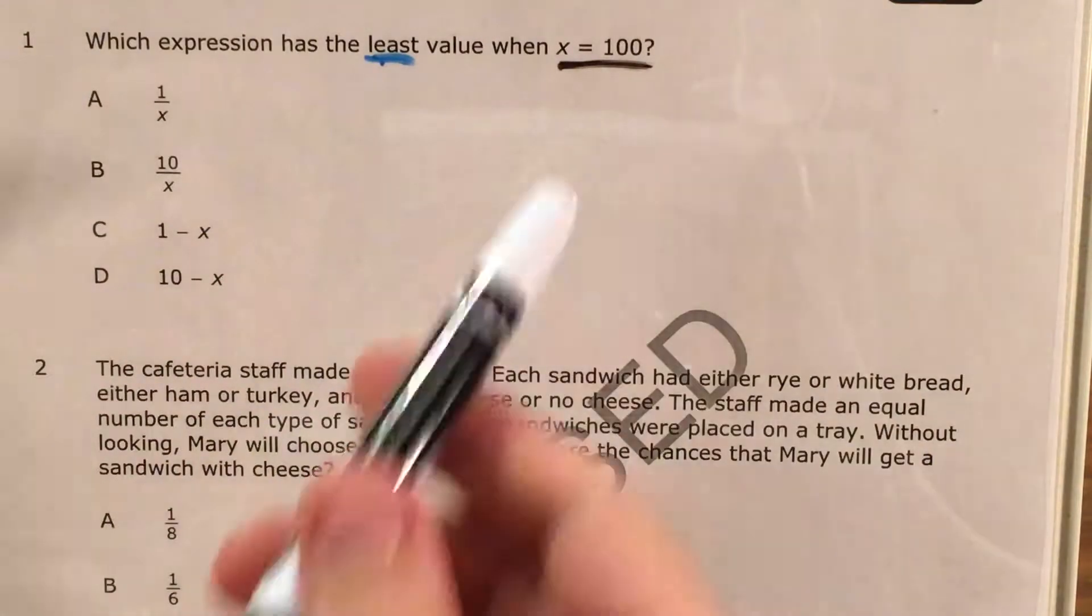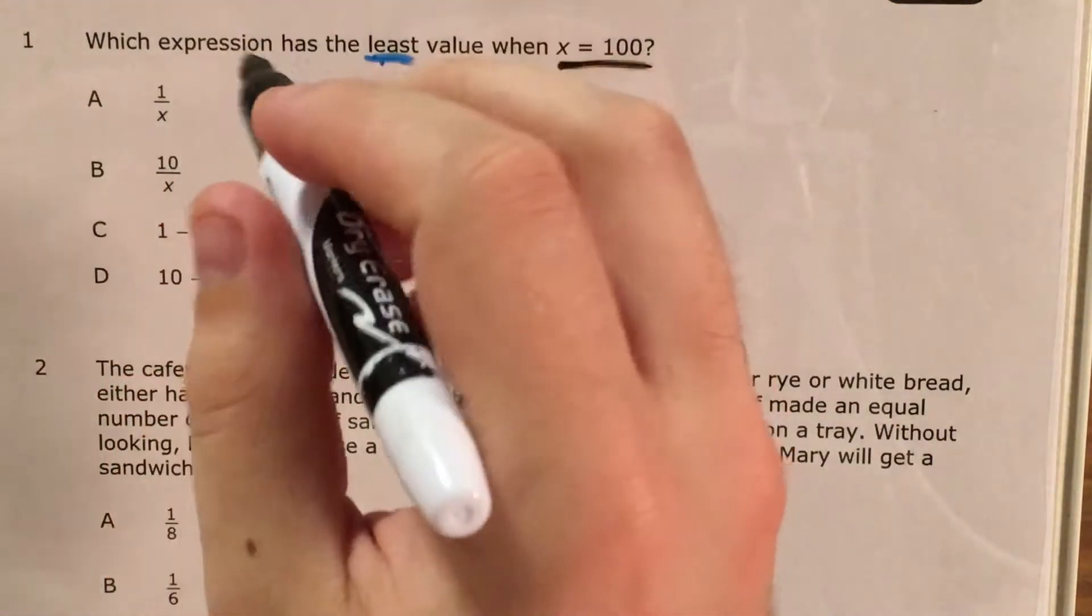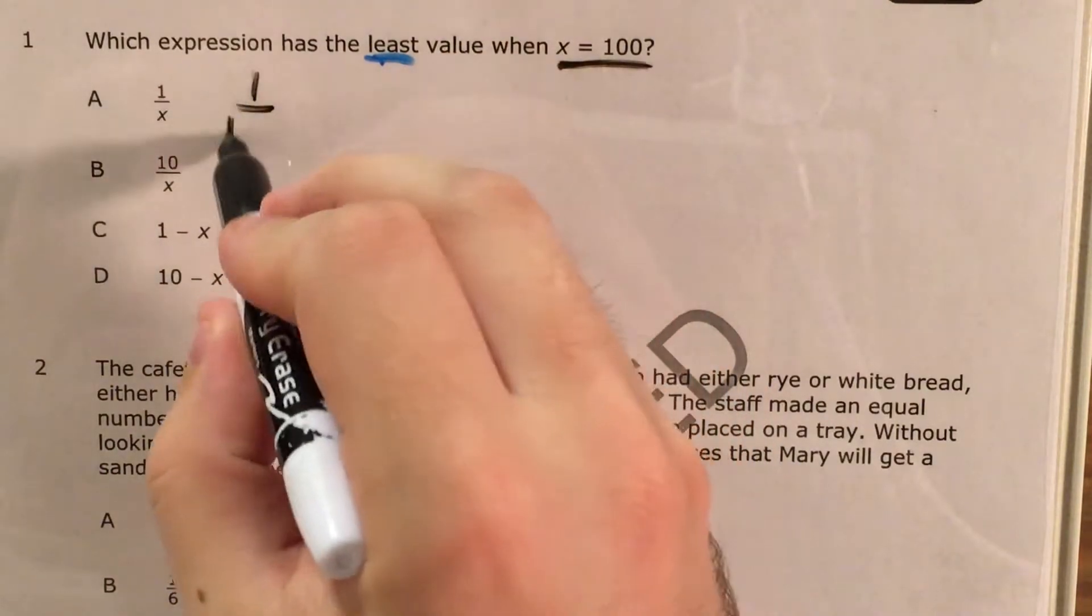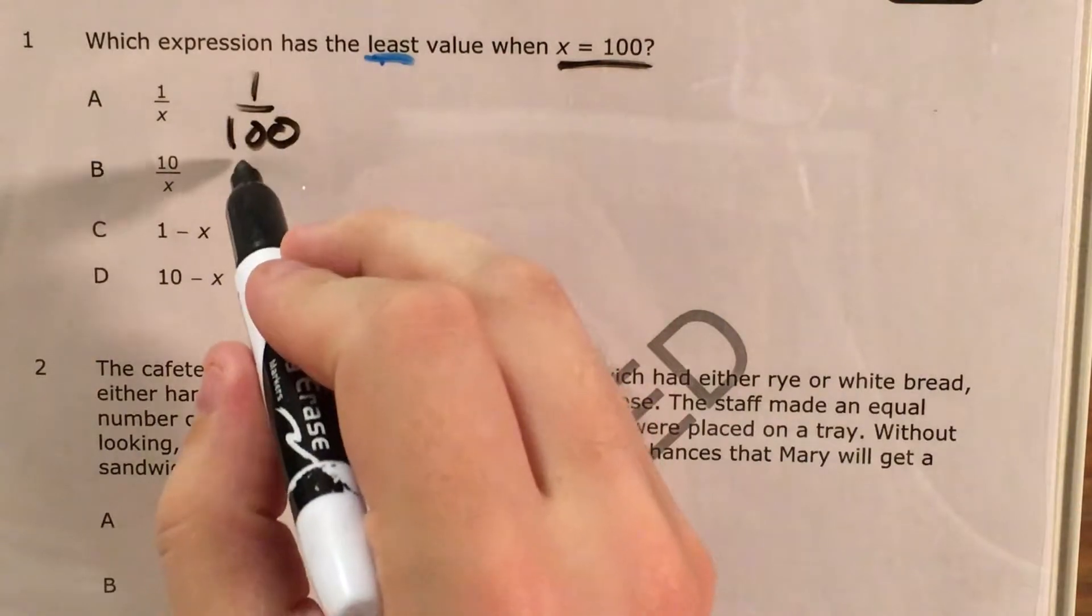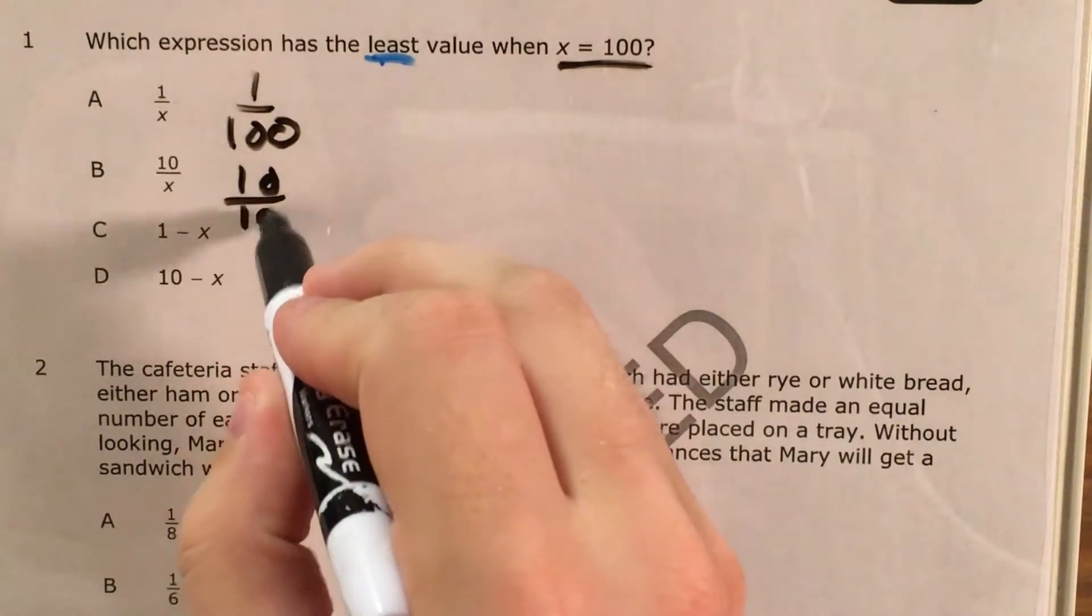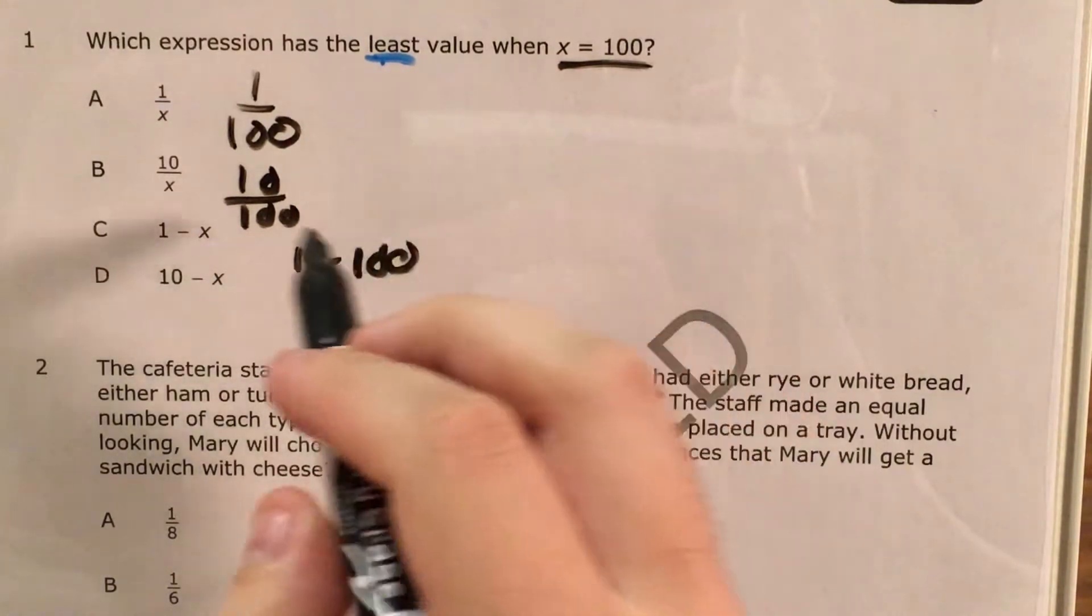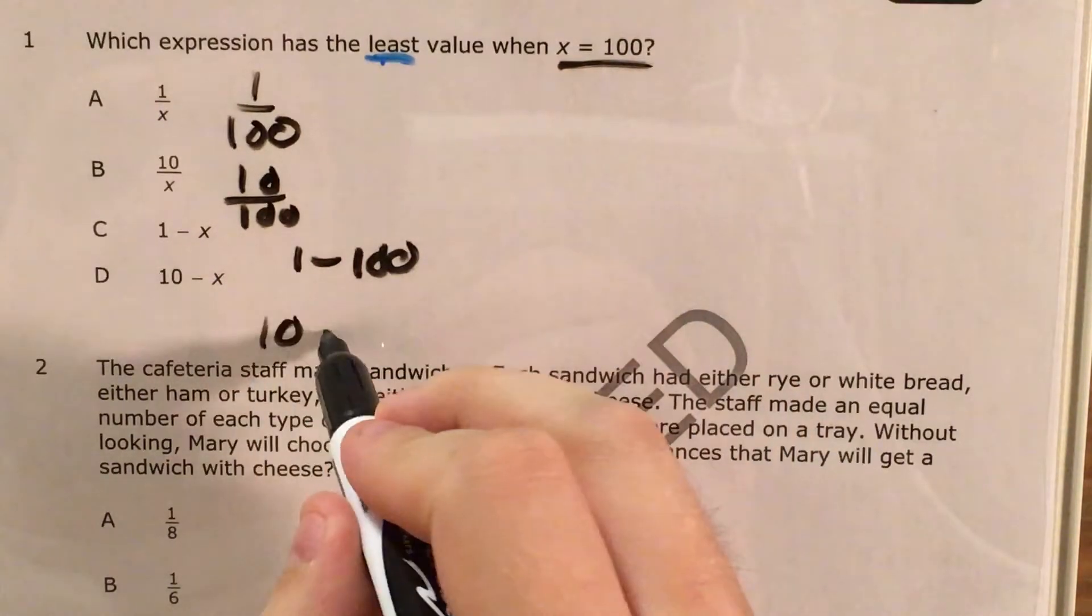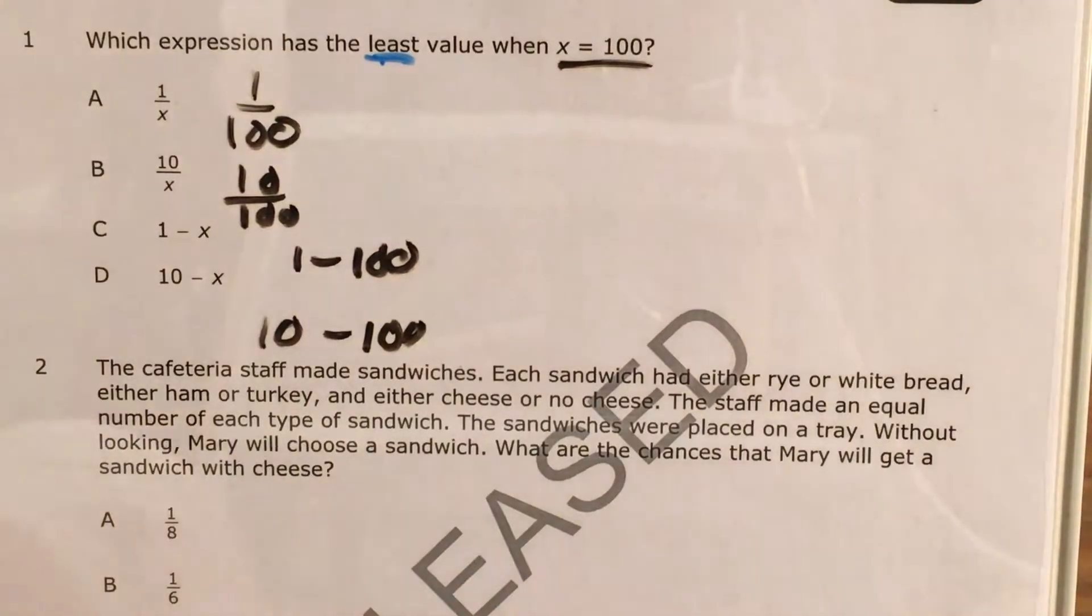Next thing that's very important is this x equals 100. That means that if I want to test out, for instance, choice A, that's going to become 1 over 100. Choice B will become 10 over 100. Choice C will become 1 minus 100. Choice D will become 10 minus 100. So let's go ahead and figure each of these out.